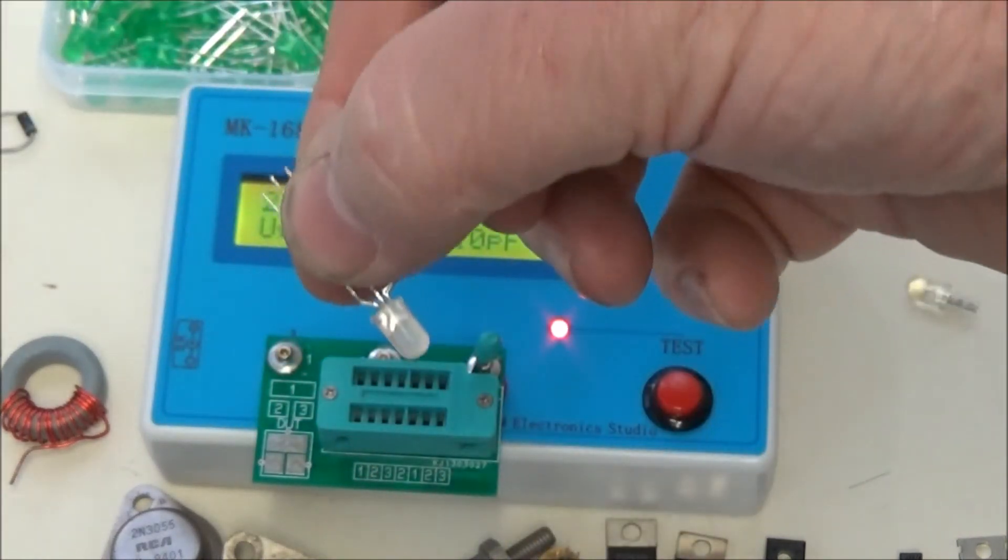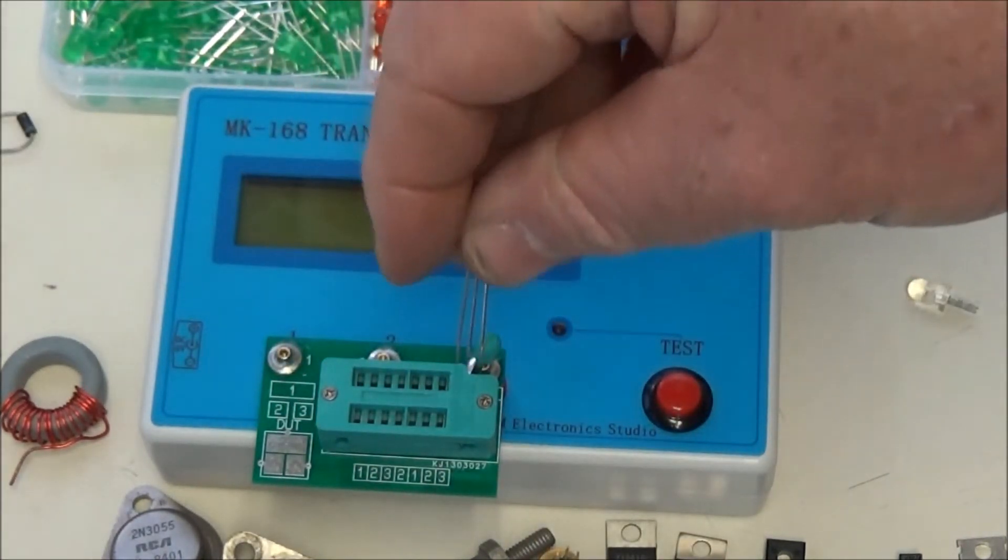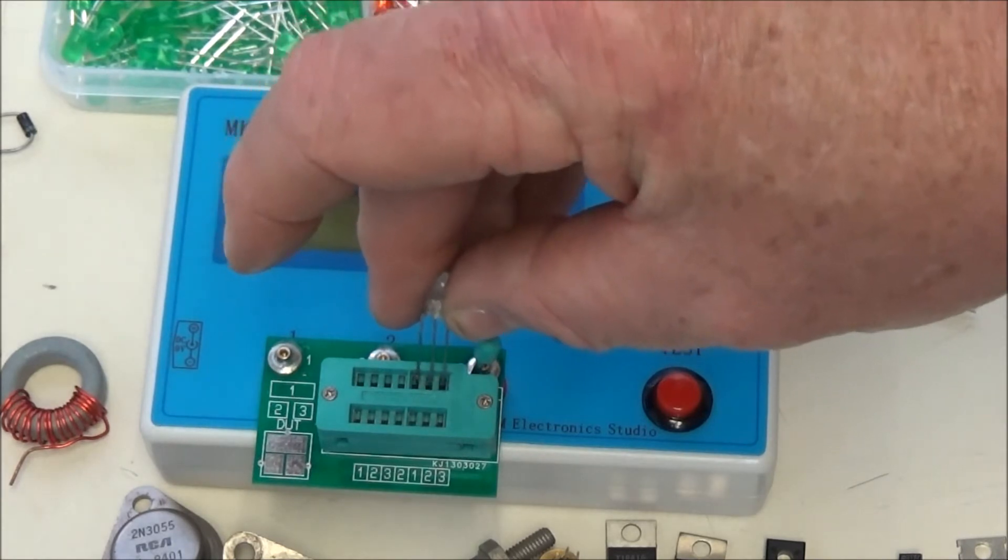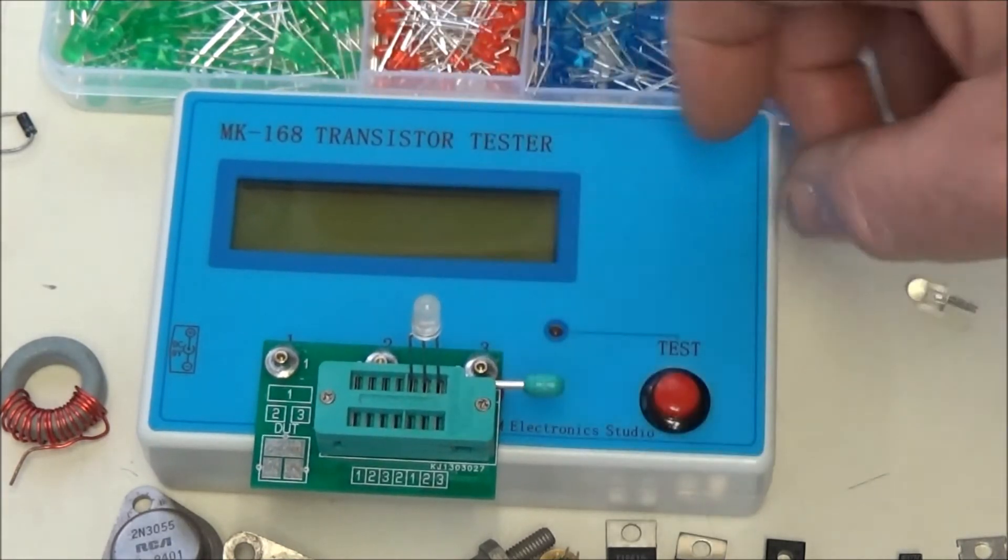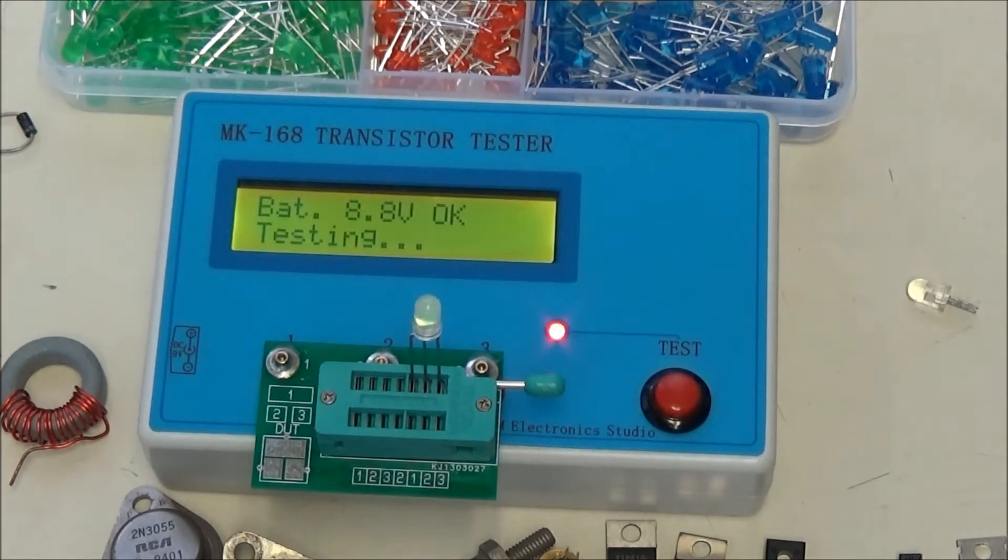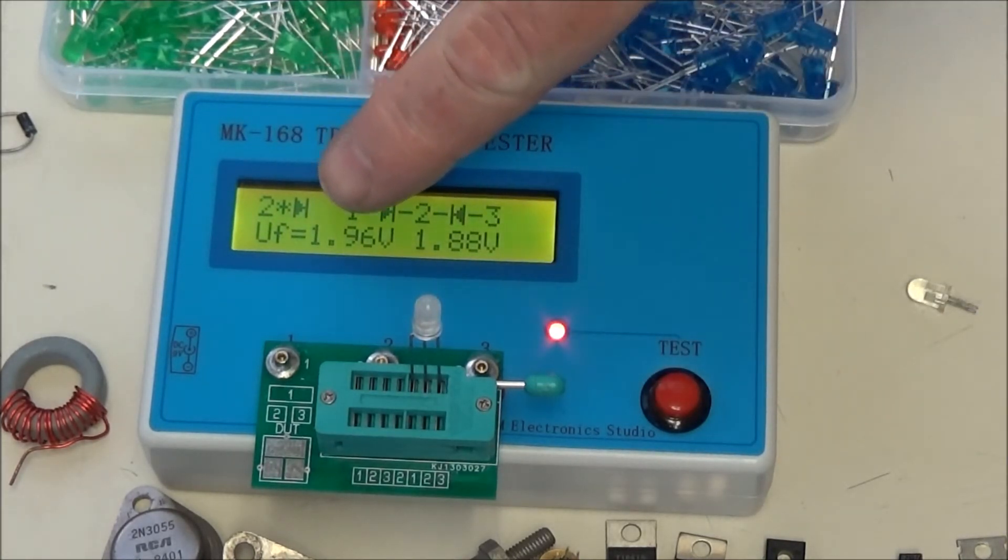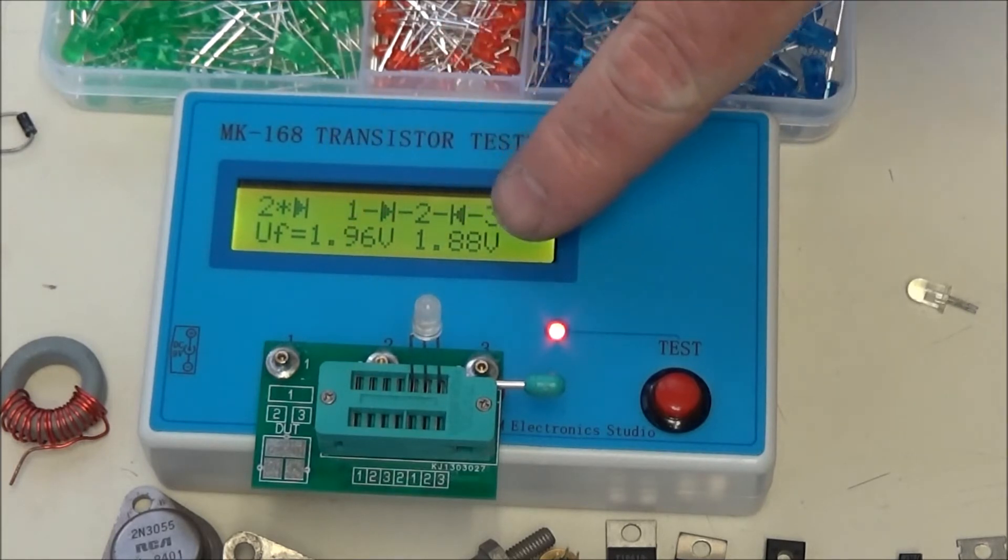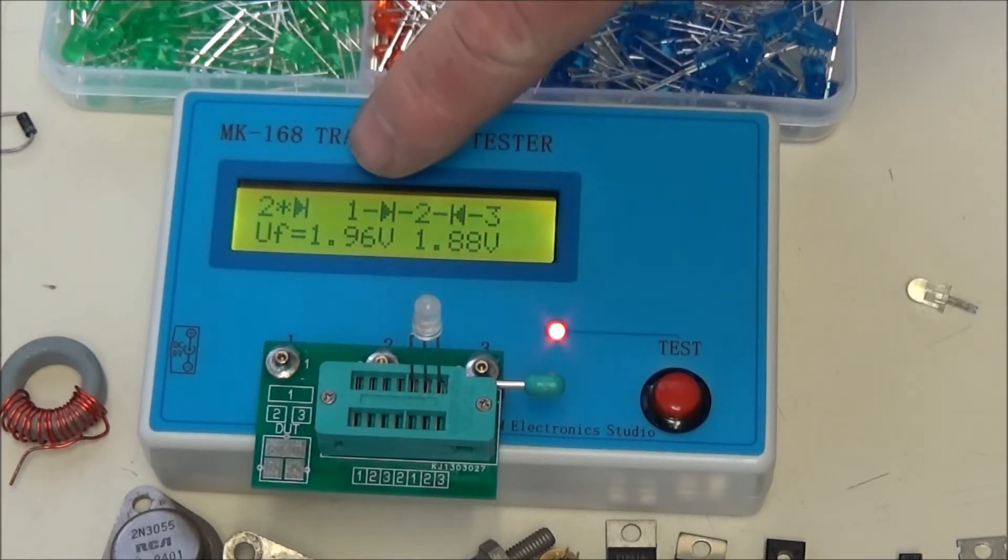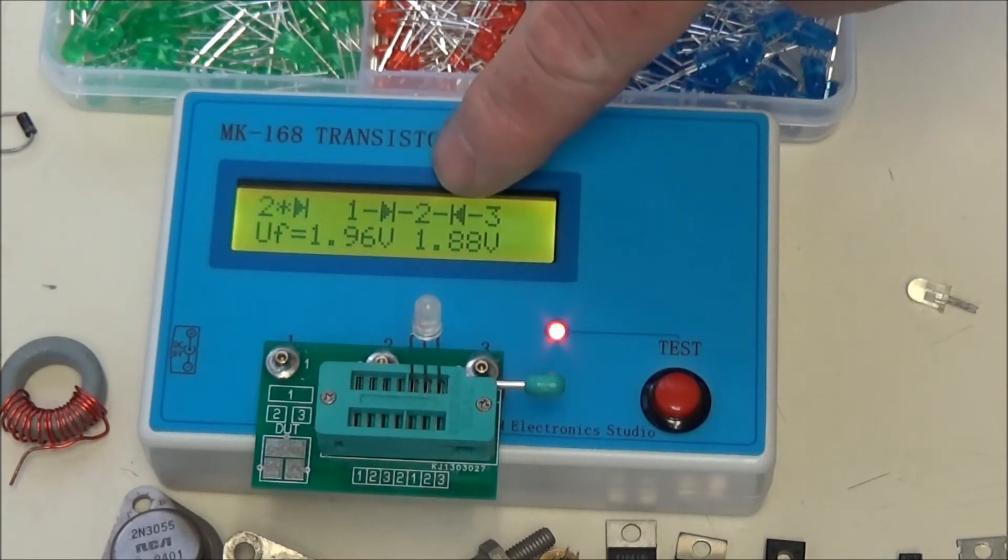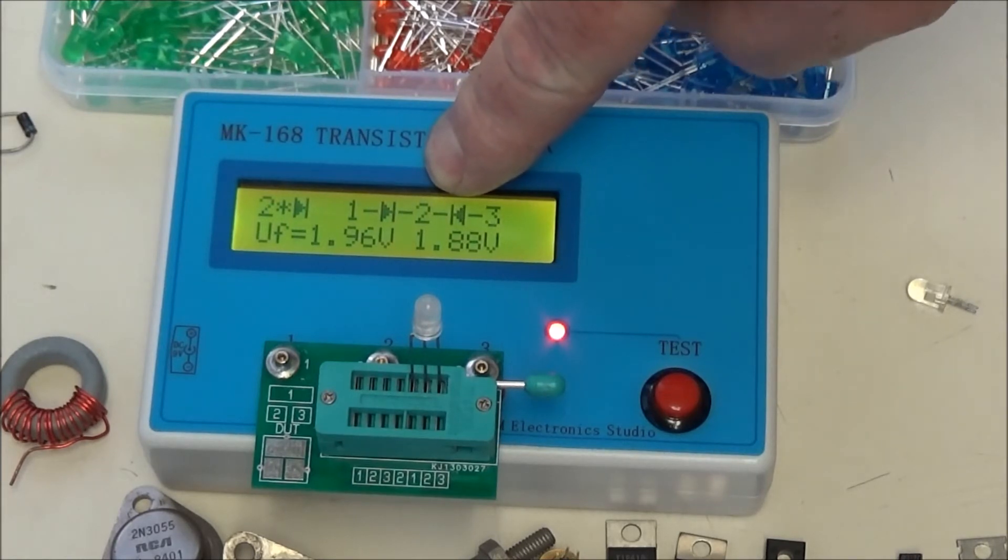Okay, it tells you the voltage on the two diodes. One of them is 1.96, one is 1.88. But you notice 1, 2, and 3. You notice the two cathodes on the diodes, if you can see them, go together. That's a common cathode dual diode.